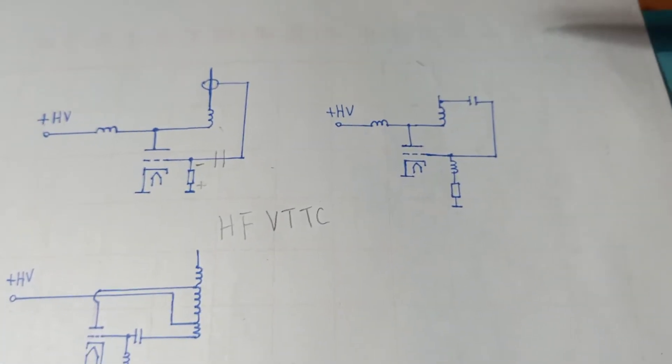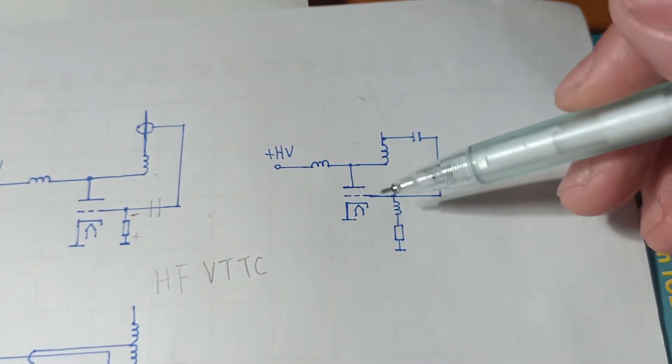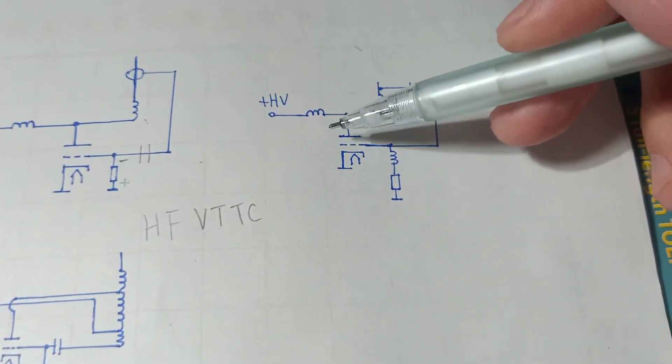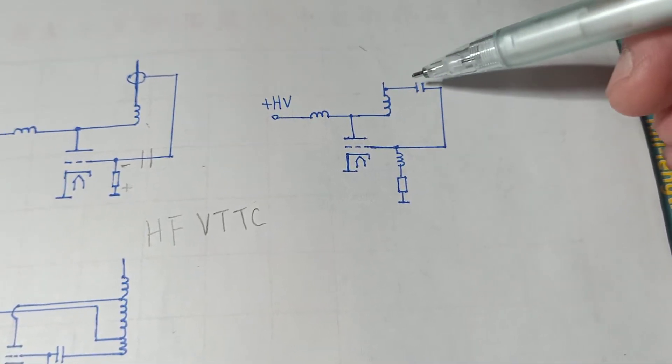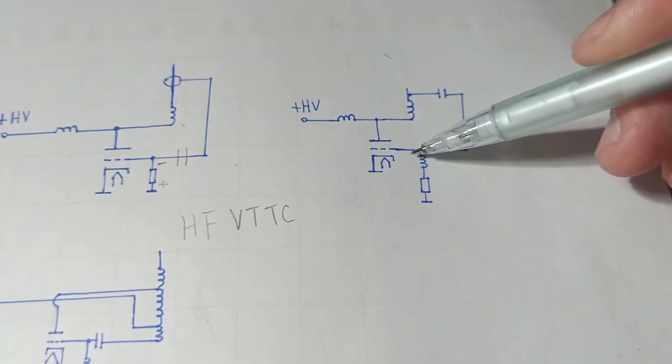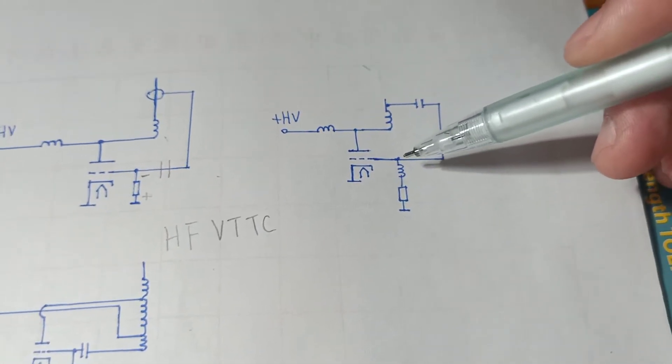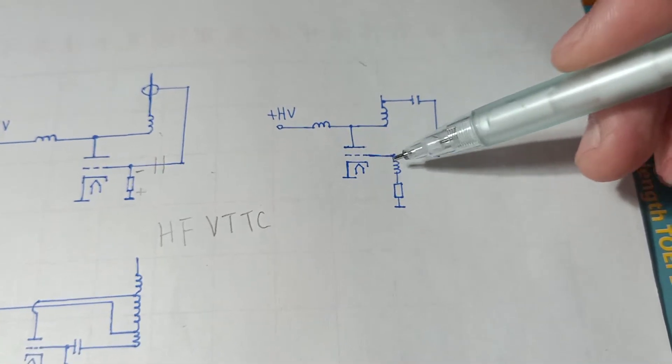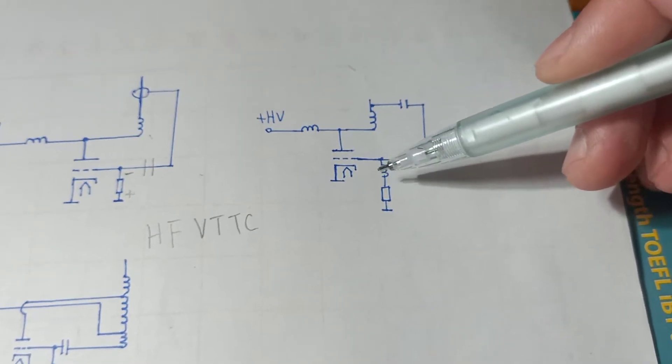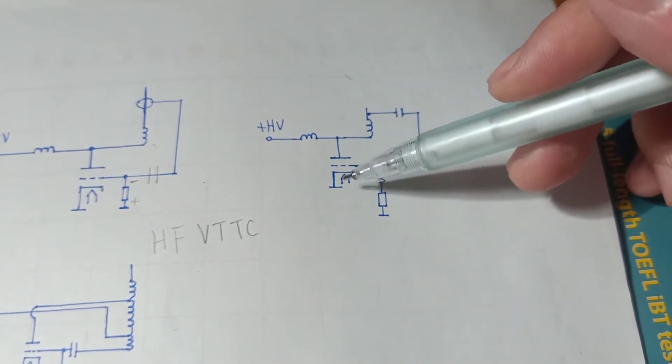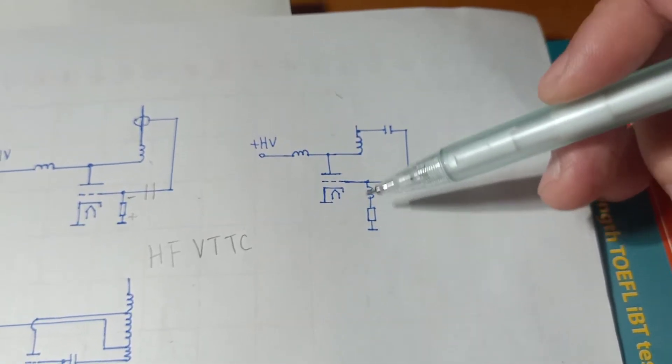And I made some improvements that if you use a larger tube which needs more drive power, you actually need a capacitor from the main resonant capacitor to the grid. And I added an RF choke from the grid to the grid resistor to block the RF energy from going to the ground. If you don't have this RF choke, it will work,